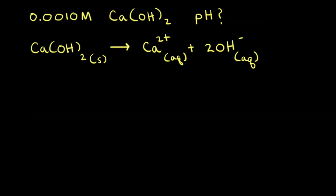Now let's do a problem with a group 2A metal hydroxide. Let's say the initial concentration of a solution of calcium hydroxide is 0.0010 molar, and our goal is to find the pH of the solution at 25 degrees Celsius. Calcium hydroxide is a strong base that dissociates completely in solution to form calcium 2+ ions and hydroxide anions.